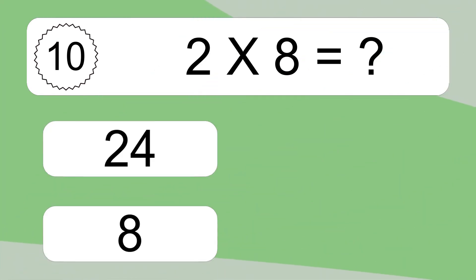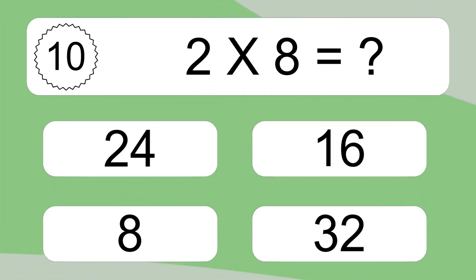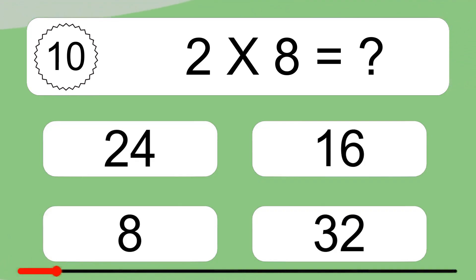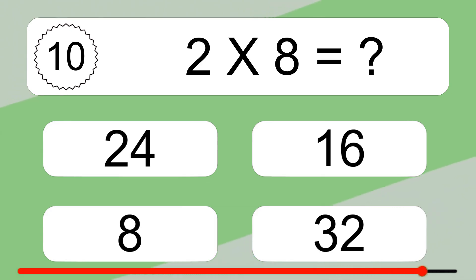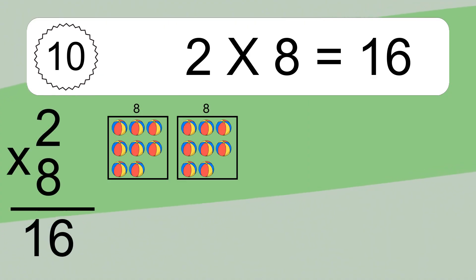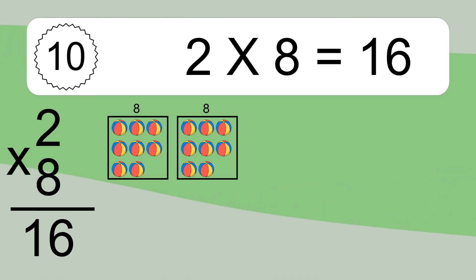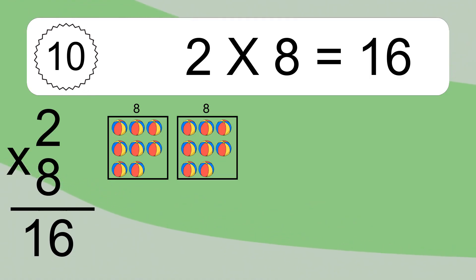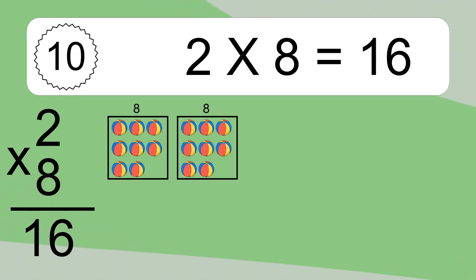2 times 8 equals what? 2 times 8 equals 16. We have 2 boxes, and each box has 8 colorful balls inside. If you count all the balls in all the boxes together, you will have 2 times 8 balls. This equals 16 balls.